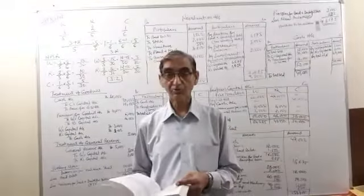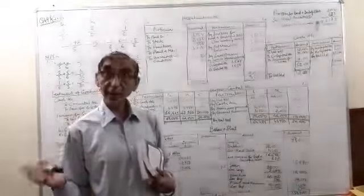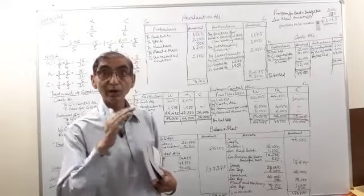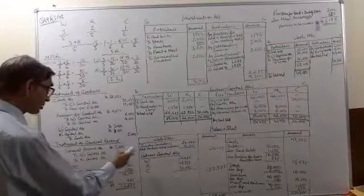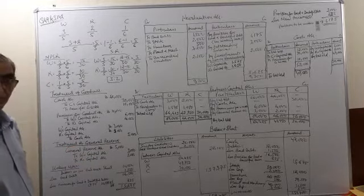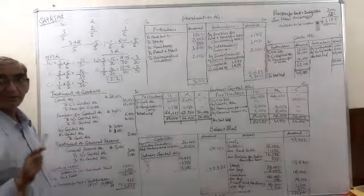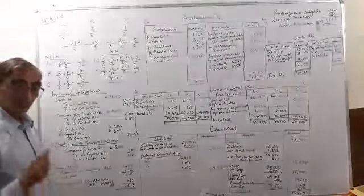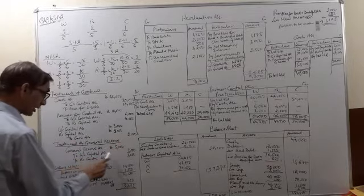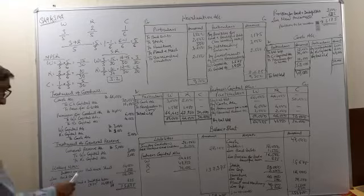The general reserve is the part of profit kept for future contingencies, earned by the firm under the old partners W and R. So it will be distributed among the old partners. General reserve given in the balance sheet is 5,000. General reserve account is debited — to W's capital account credited by 3,000 and to R's capital account credited by 2,000.